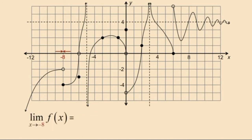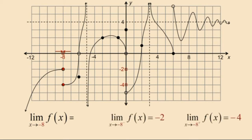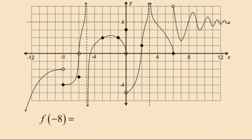Now let's take a look at the two-sided limit about x equal negative 8 and notice what the y values are doing. Remember that in order for the two-sided limit of f of x to exist at x equal negative 8, the one-sided limits must be approaching the same value, regardless of whether x approaches negative 8 from the left or from the right. At x equal negative 8, this is not the case and therefore we say the two-sided limit does not exist. But let's not forget about the function value at x equal negative 8 — it is in fact equal to negative 4.